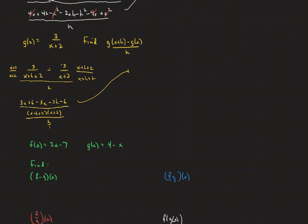Now we cancel the 3x's and the 6's, leaving us with negative 3h over (x plus h plus 2)(x plus 2). To divide by h we multiply by the reciprocal, canceling the h. This gives us negative 3 over (x plus h plus 2)(x plus 2). Even though that looks messy, that is our answer.